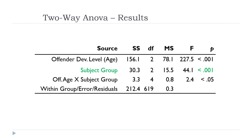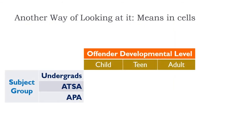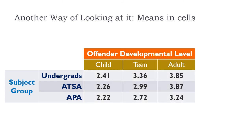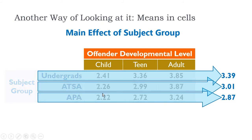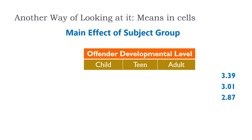Now let's talk about the main effect of subject group. Going back to the cells, now we collapse across offender developmental levels. We ask: what's the mean rating all the undergrads gave their offenders, regardless of developmental level? The average was 3.39. For ATSA members, 3.01. For APA members, 2.87. These are the marginal means — now the margins are the rows, not the columns.